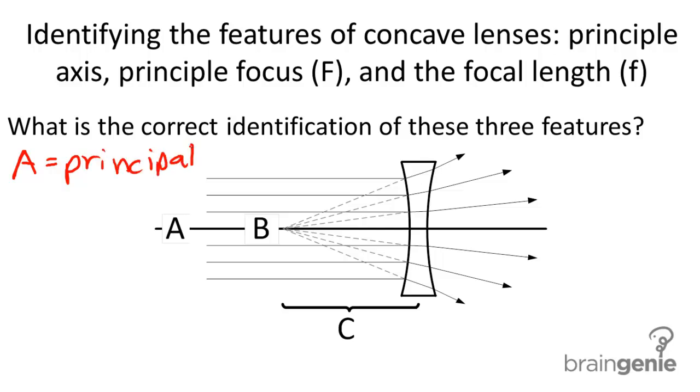The principal axis is the axis that goes through both the principal focus as well as the midpoint or optical center of the lens.